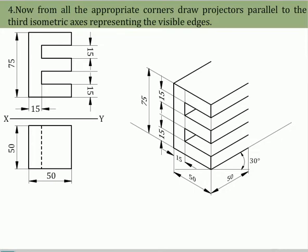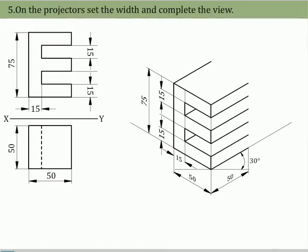From all the appropriate corners, drop projectors parallel to the third isometric axis representing the visible edges. On these projectors, set the width of the solid and complete the view.